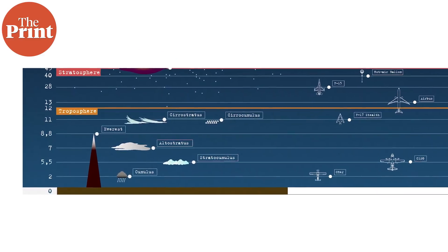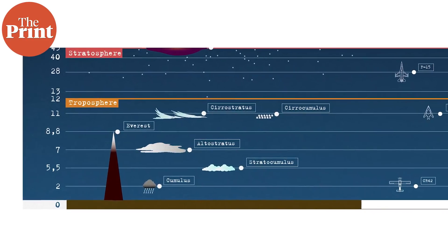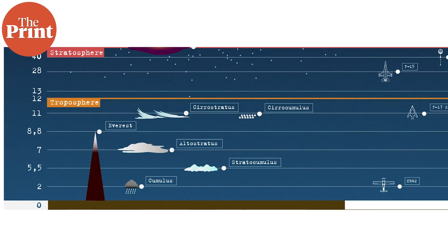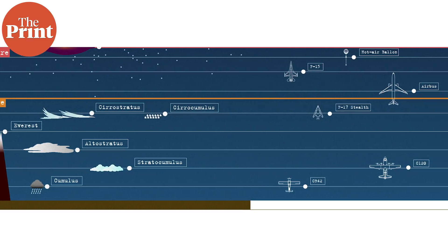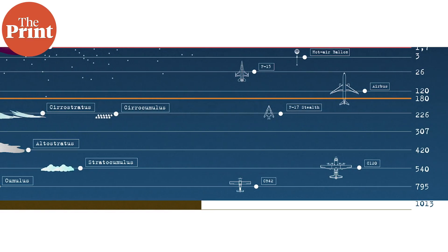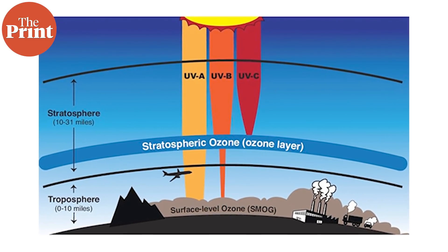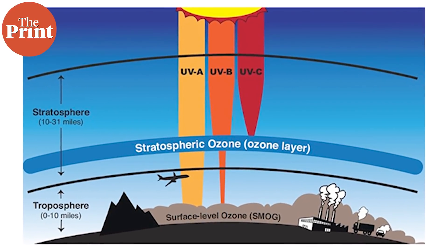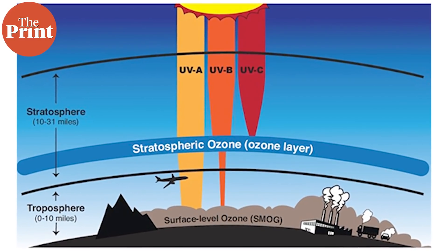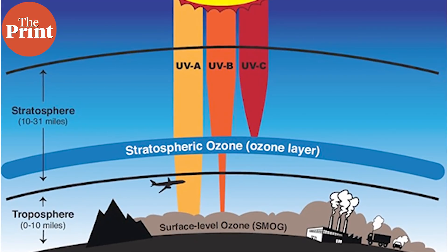Beyond the tropopause comes the stratosphere, spanning about 50 kilometers. This layer contains nearly all the ozone that protects us from harmful UV radiation from the sun, protecting us from cancer and other deadly diseases, and protecting all life on Earth. In this layer, because ozone absorbs UV radiation, the temperature actually climbs as we go up — the opposite of what happens in the troposphere.